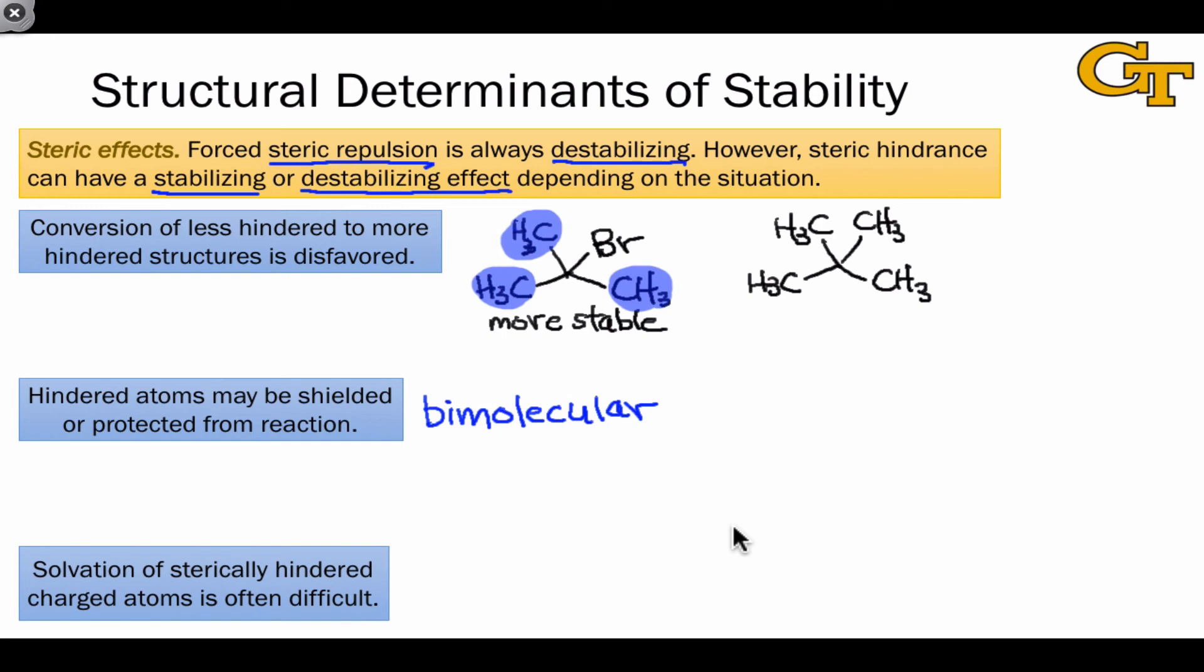Finally, the solvation of sterically hindered charged atoms is often difficult, and this can lead to a somewhat surprising reactivity for atoms that appear to be sterically hindered. A good example is provided by a series of alkoxide anions with different steric hindrance near the negatively charged oxygen atom.